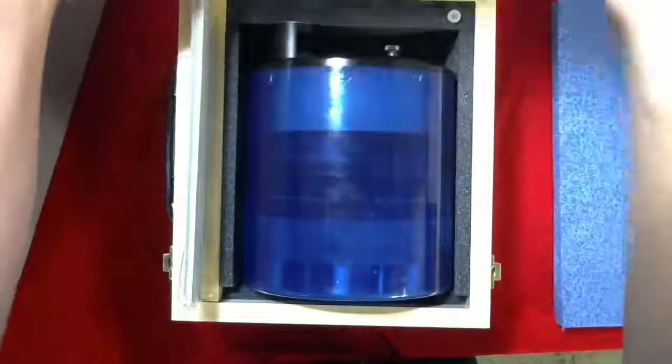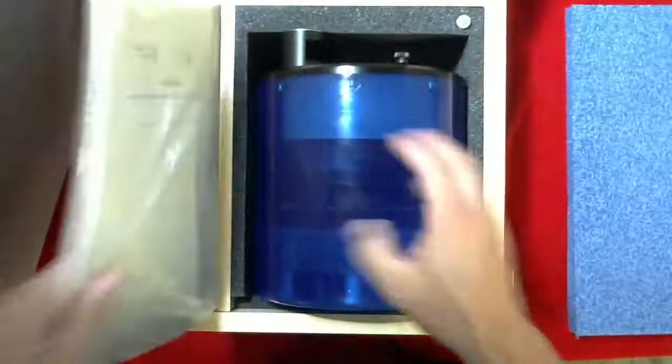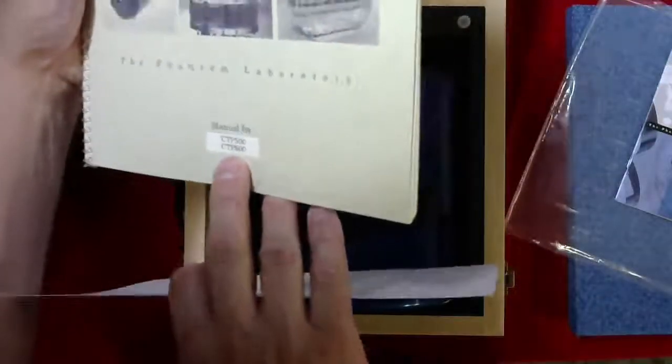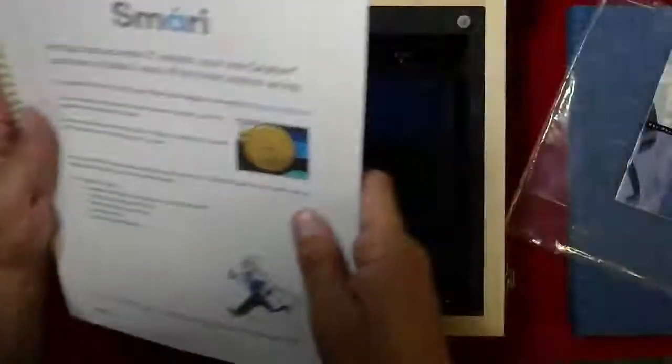As you can see inside here, we'll start with the manual. This is the manual for the CAT Phantom. This is a CAT Phantom 600, this particular model, and you can see it.